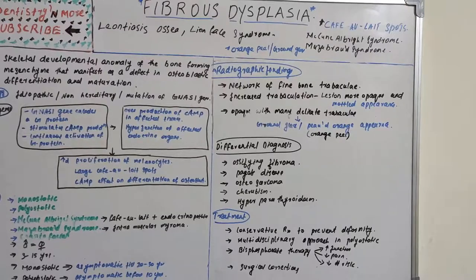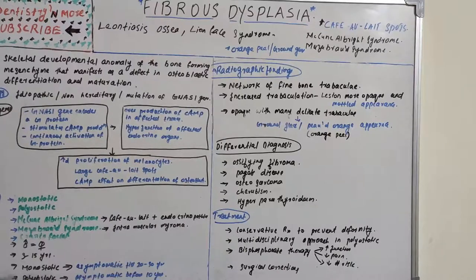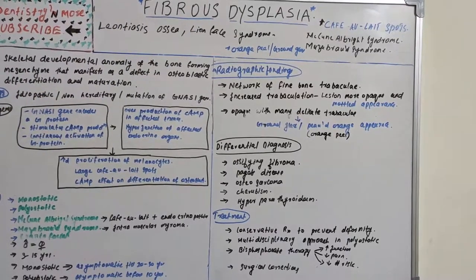Differential diagnoses include ossifying fibroma, Paget's disease, osteosarcoma, cherubism, and hyperparathyroidism. Treatment includes conservative management to prevent deformity; polyostotic form requires a multidisciplinary approach. Bisphosphonate therapy — similar to Paget's disease — is used to improve function, decrease pain, and reduce fracture risk. Surgical correction is also employed. Key takeaways: café-au-lait spots in McCune-Albright syndrome, Mazabraud syndrome, ground-glass/orange-peel appearance, and leontiasis (lion face syndrome).